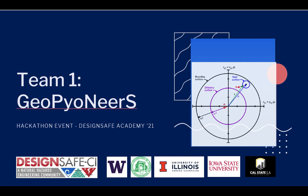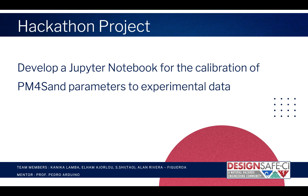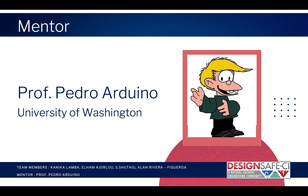Welcome everyone to our hackathon project presentation for the DesignSafe Academy 2021. Our team's name is GeoPioneers. Our hackathon project is developing a Jupyter Notebook for the calibration of PM4Sand parameters to the experimental data. Our mentor for the hackathon project is Professor Pedro Ardino from the University of Washington, who provided us the hackathon problem to be solved.